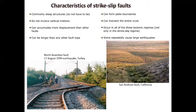This type of fault can accumulate more displacement than other faults, and because of that, this very long horizontal displacement can also produce great earthquakes in terms of magnitude and damage. They can be longer than any other fault type. Usually dip-slip faults will form shorter fault segments over time; those shorter segments can get linked and connected to form a longer segment.